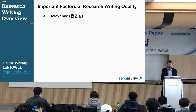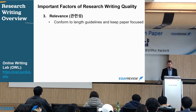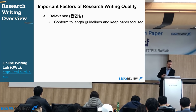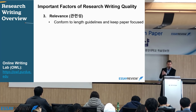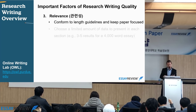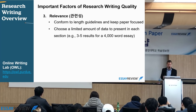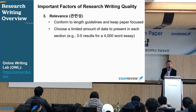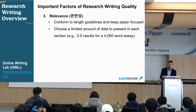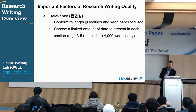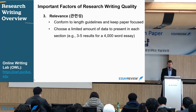The third factor of writing is relevance. Relevance means a lot of things — it means conforming to length guidelines and choosing the right data. For example, if you have a research paper that's 4,000 words, you don't want to write ten results or ten methods. You want to make sure the research methods and results you include are relevant and most important.